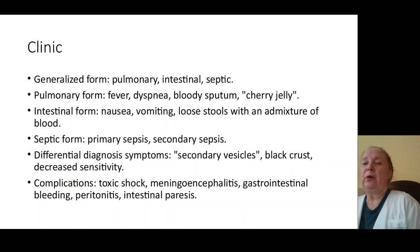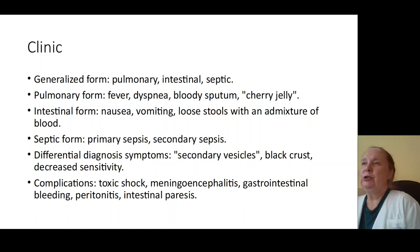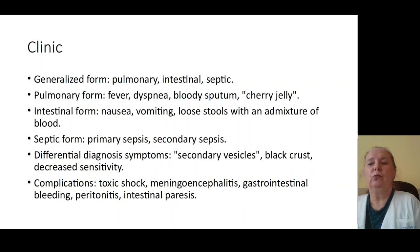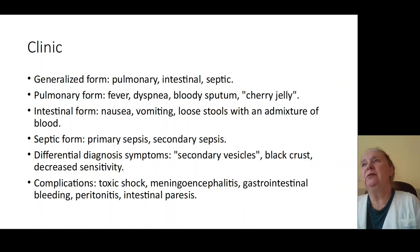Diagnostic symptoms of anthrax carbuncles include: secondary vesicles around the ulcer, black crust on the ulcer, and decreased sensitivity of the ulcer. Complications include toxic shock, meningoencephalitis with loss of consciousness, paralysis, clonic cramps, gastrointestinal bleeding, nausea, vomiting with blood admixture, peritonitis, intestinal paralysis, ulceration of intestine, and intestinal bleeding.